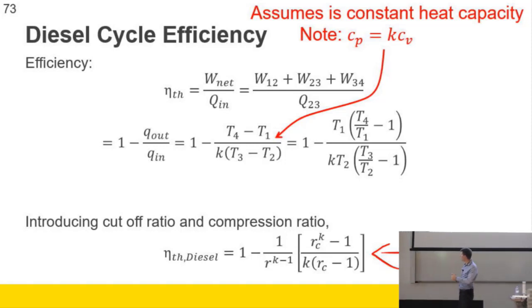So just intuitively, would a large cutoff ratio or a small cutoff ratio, so the cutoff ratio is bounded to be at least one, because volume three divided by volume two is a division, so it's going to be at least one. And I guess it could be equal to the compression ratio. So you could have your RC is bounded in an upper limit to be R because you can't inject diesel for longer than it takes for the cylinder to reach bottom dead center. So intuitively, is a small RC or a large RC, so an RC closer to one or closer to R, better based on this formula?